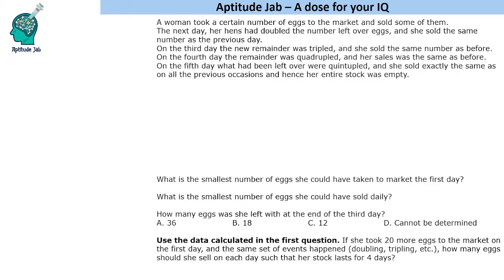On the fourth day, the remainder was quadrupled—quadrupled means becoming four times—and her sales were the same as before.